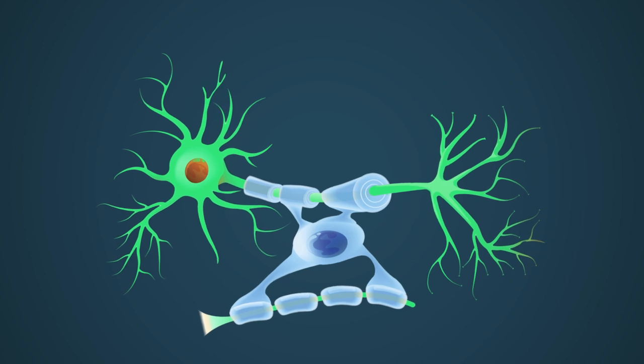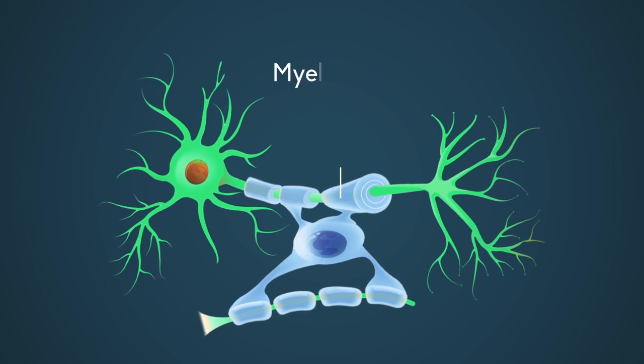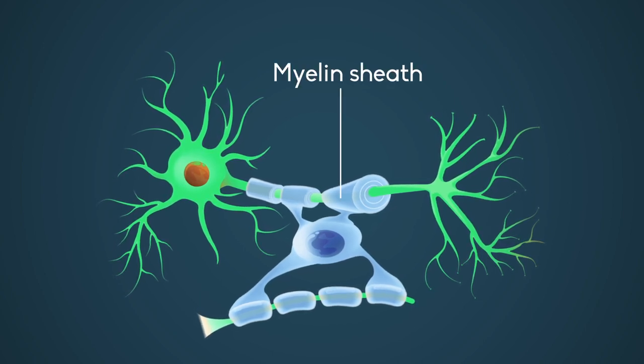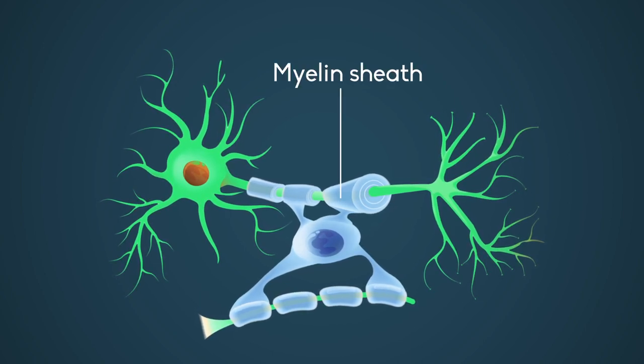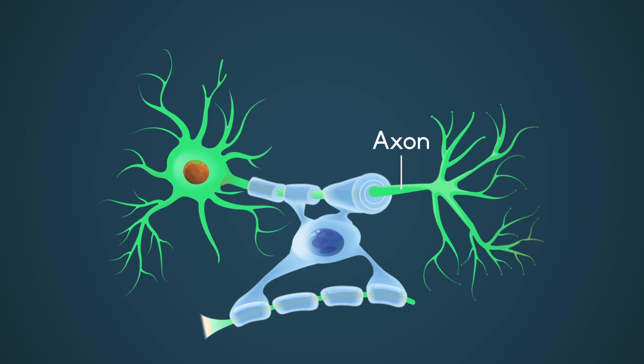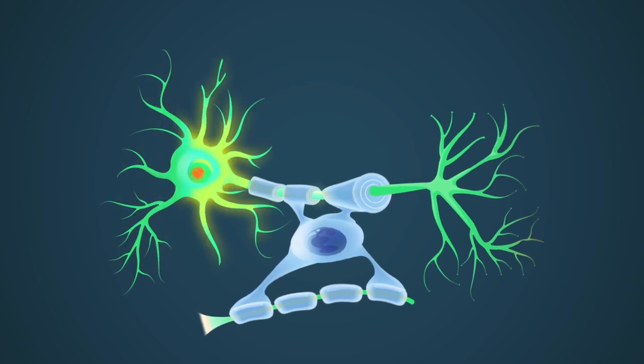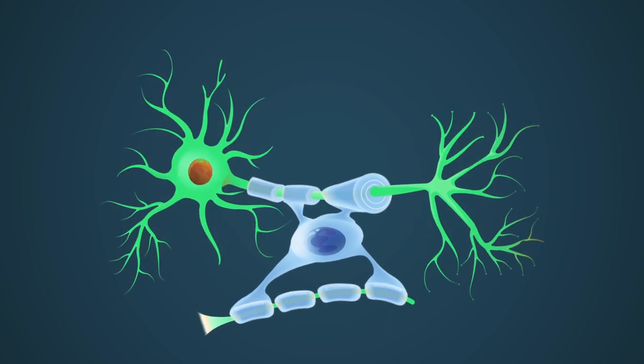Oligodendrocytes are a type of glial cell that produce myelin sheath. The myelin sheath insulates segments of the neuronal axons, which allows high velocity signal transduction to pass along the axon.